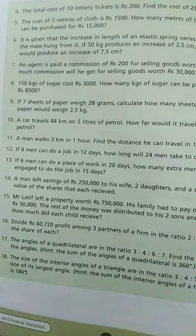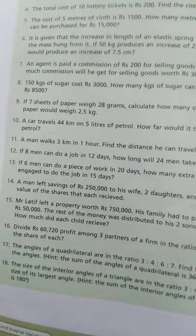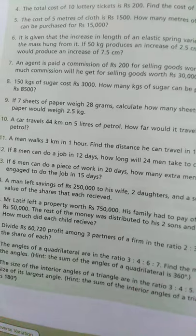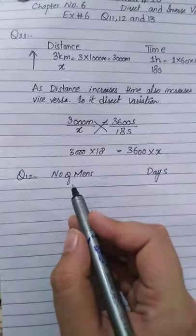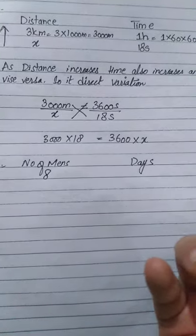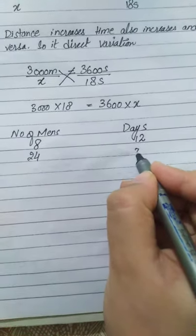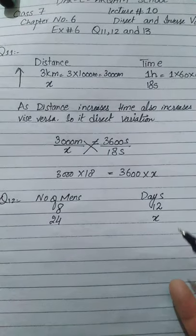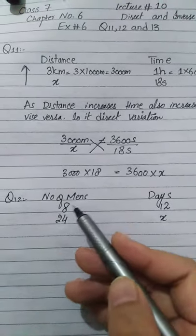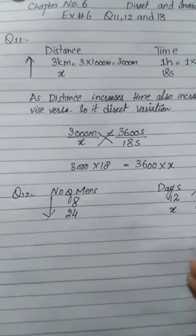Now moving to question number 12. Eight men can do a job in 12 days. How long will 24 men take to complete it? The heading here is: Number of Men and Days. Eight men do the job in 12 days. If we increase the number of men to 24, how many days will they take to do the same work? As the number of people increases, the days decrease.